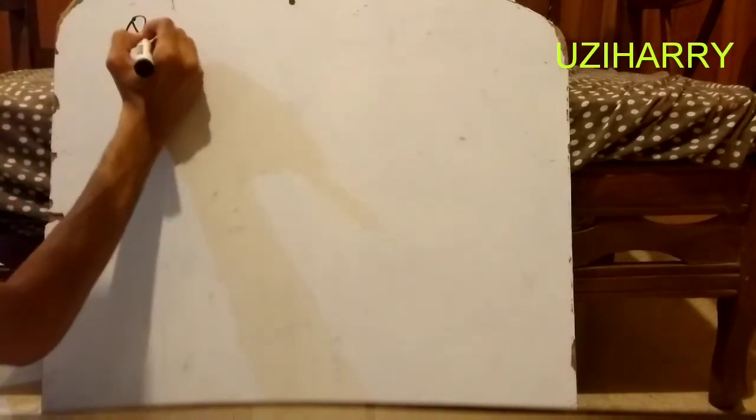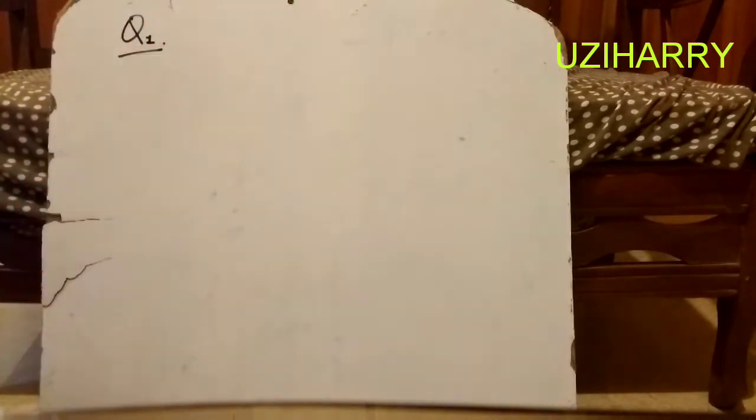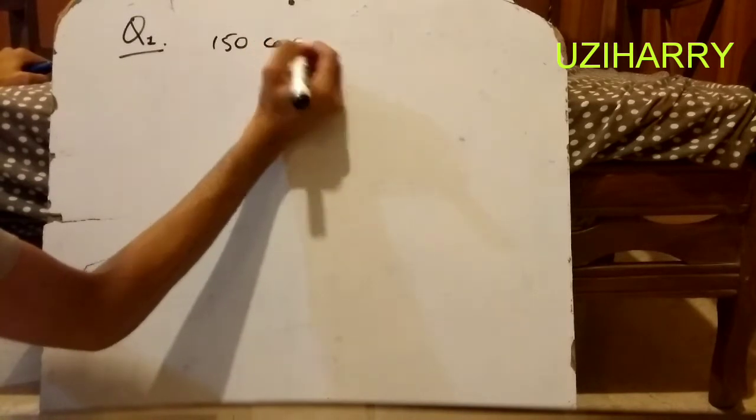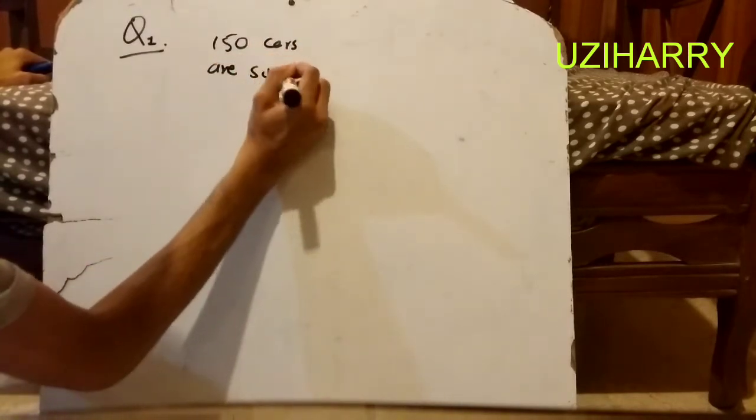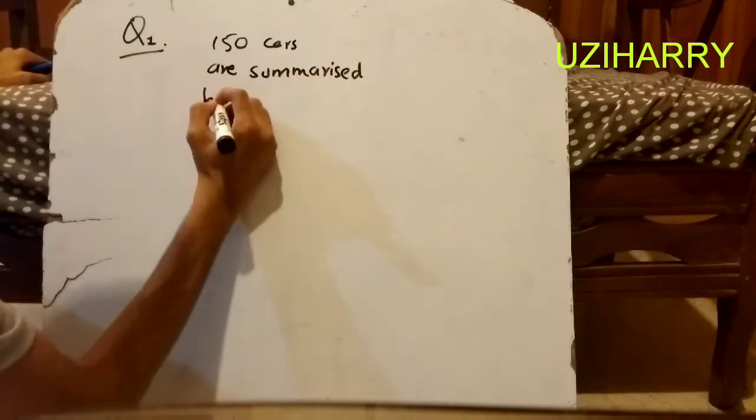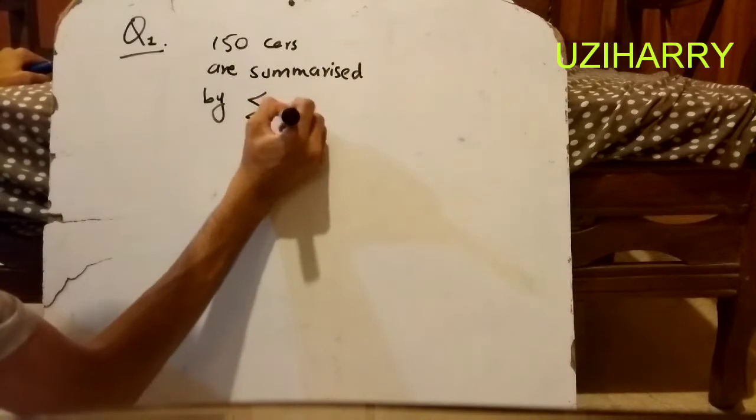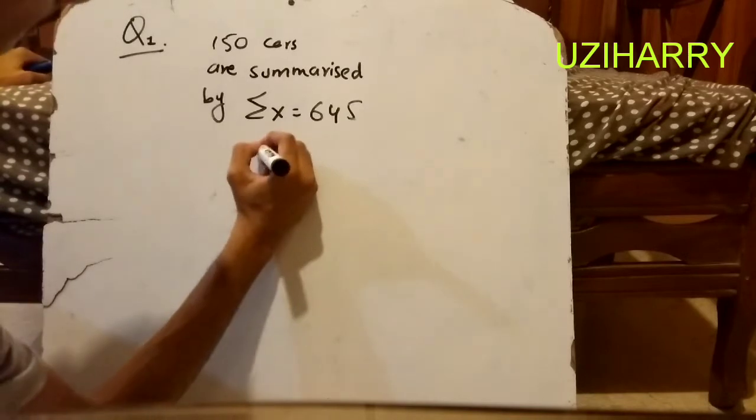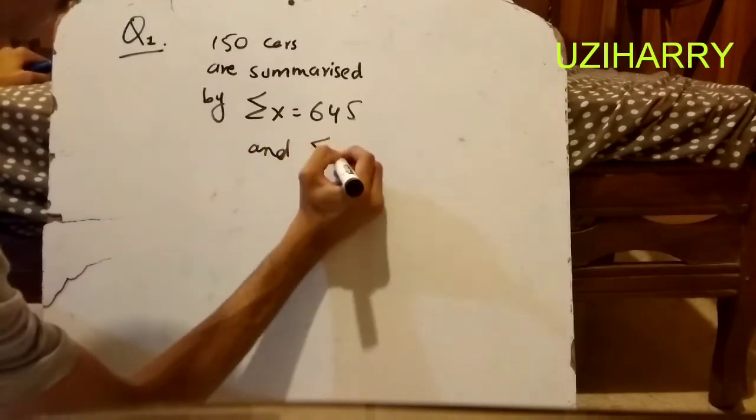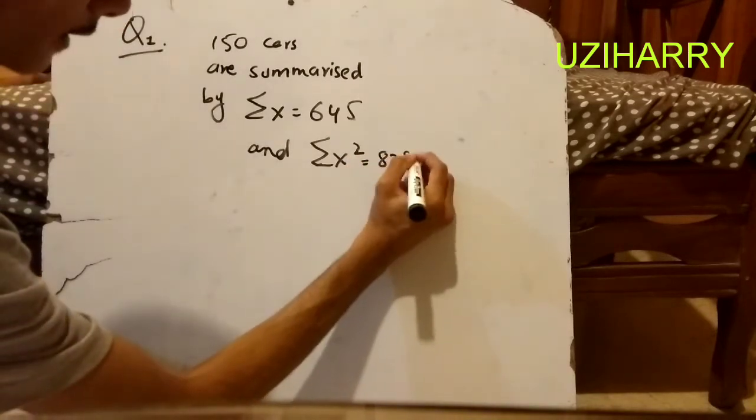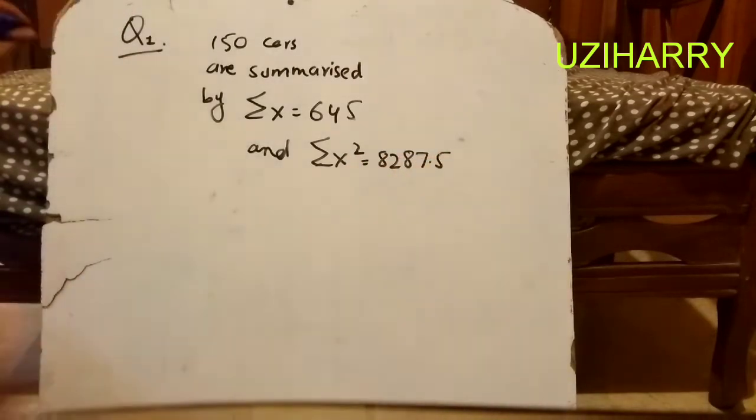The question says, it's one question on the paper. The question says that 150 cards are summarized by summation of x equals 645 and summation of x square equals 8287.5.